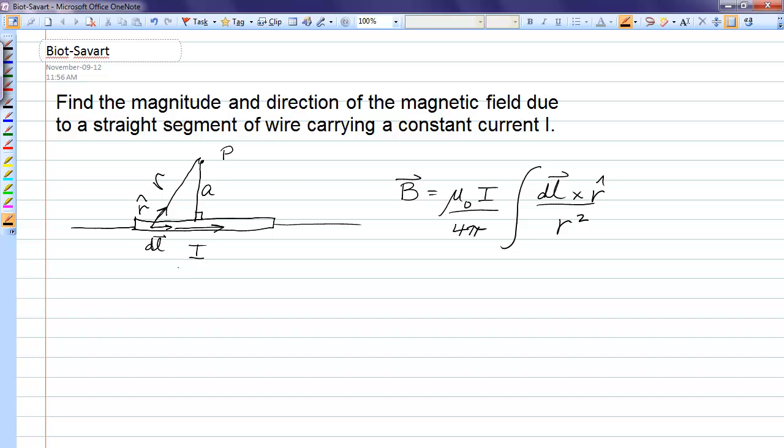Okay so first of all what we want to do is deal with the cross product that's inside the integral. The vector dl can be written as dx i-hat because it's in the x direction.